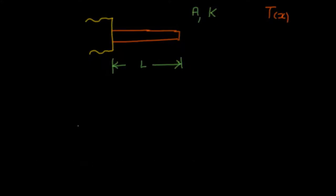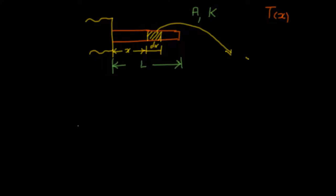Now I am going to consider a small region on this pin fin and localize my attention there, represented by the yellow region. This small region has a length of magnitude dx, and is considered at a distance x from the left extreme end. I will represent the magnified, amplified view of this small region.